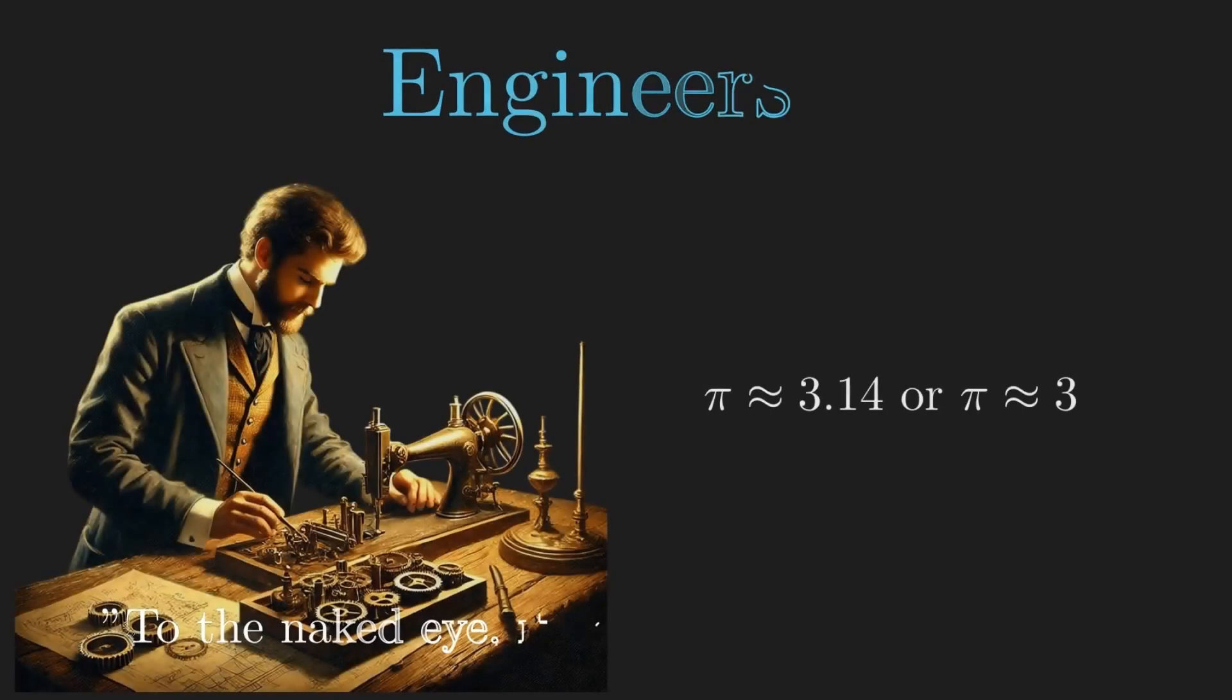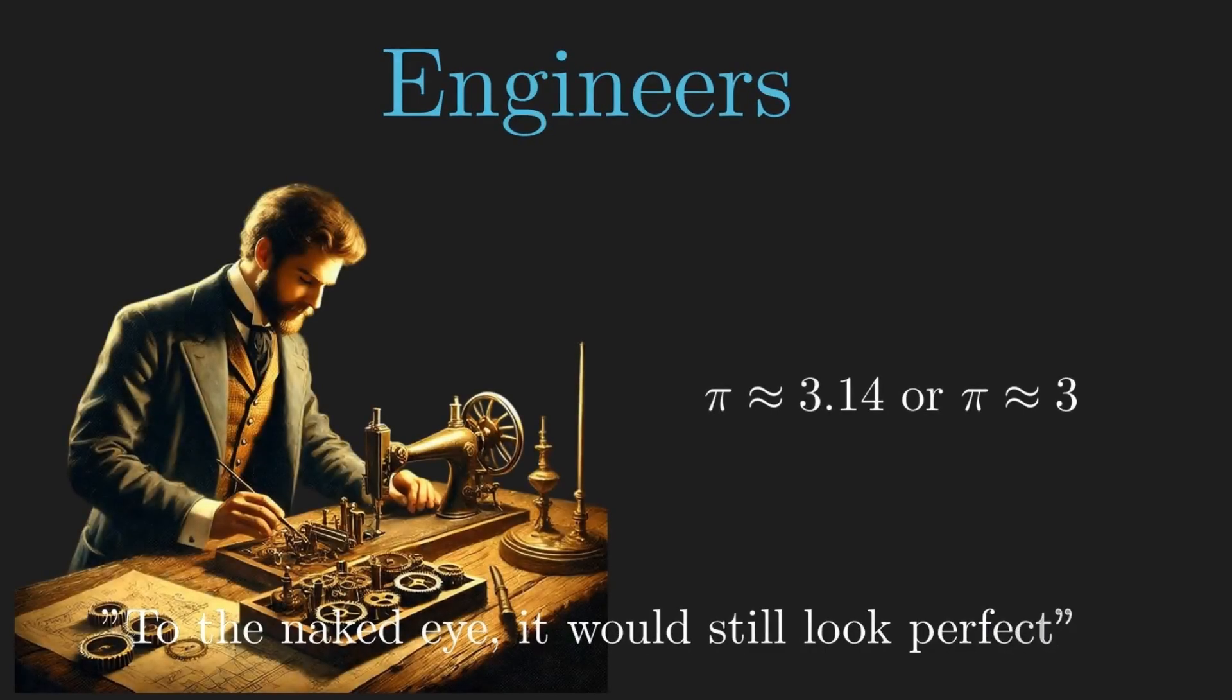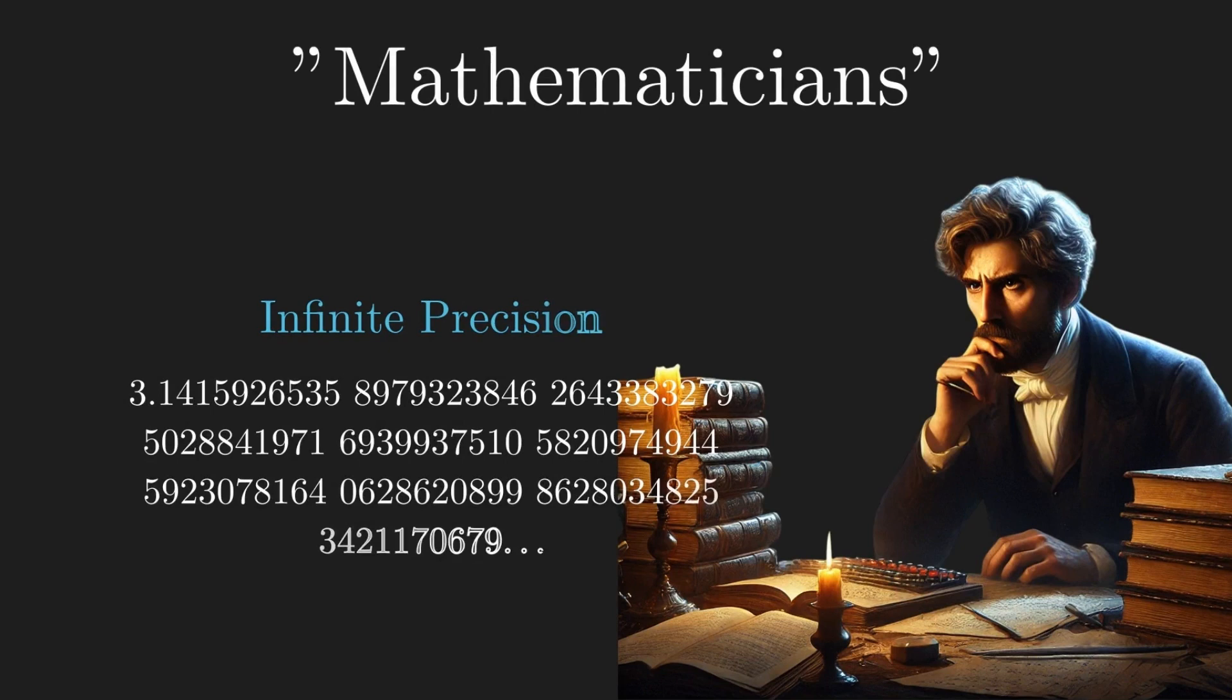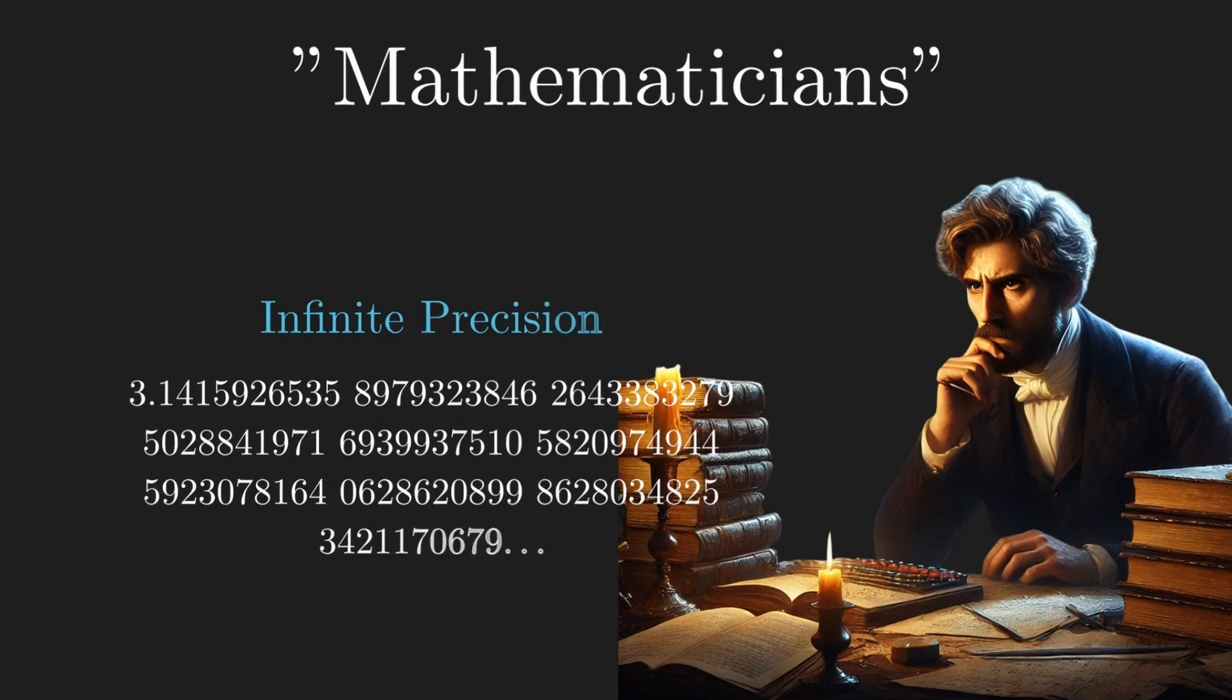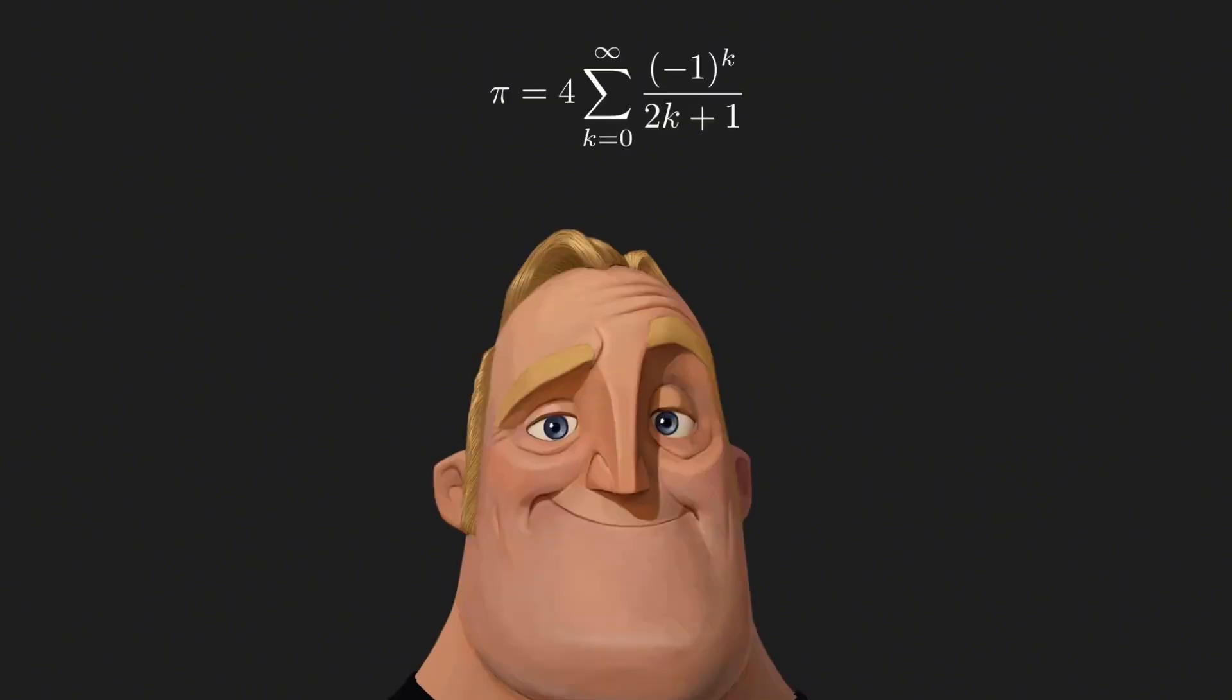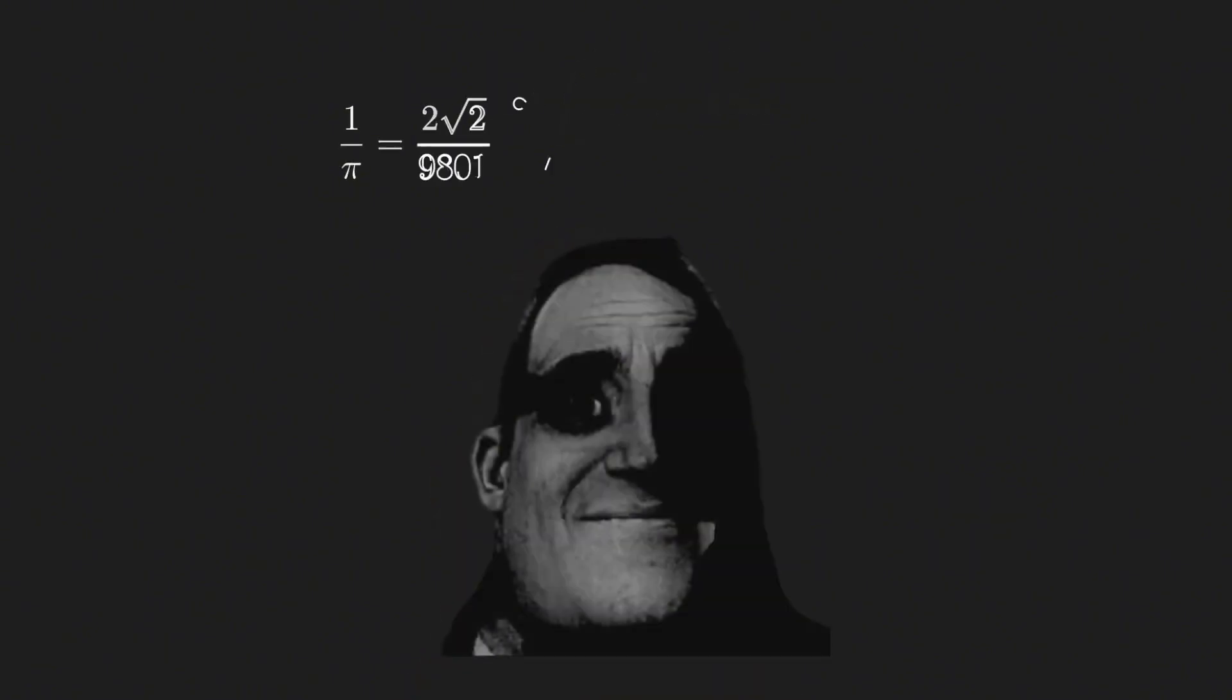Engineer might use 3.14 or even just 3, and to the naked eye a circle would still look perfect. But mathematicians, they aren't satisfied. They want infinite precision. For centuries, the quest for Pi accuracy has driven both mathematics and computing, leading to formulas that almost look unnatural, some even downright terrifying in their complexity.